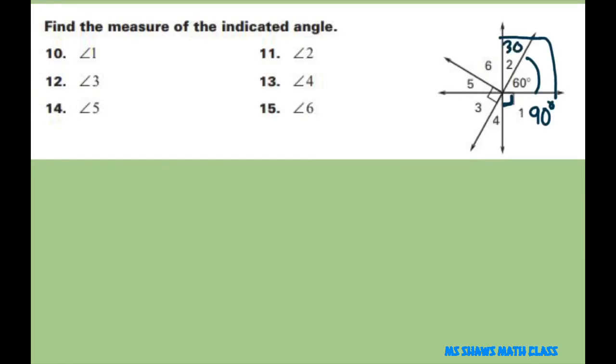So angle 2 is 30. We know that angle 1 is 90 degrees. Angle 2 is 30 degrees and angle 3 is 60 from our vertical angle congruence theorem.